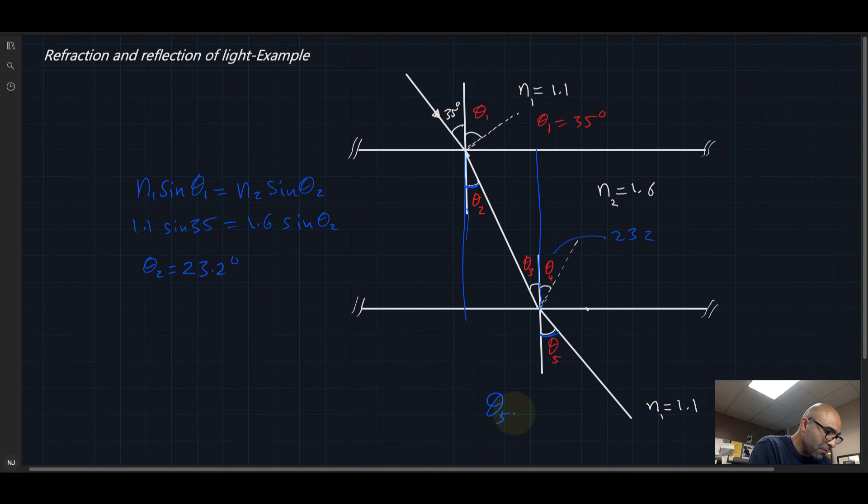So theta 5 must be equal to 35 degrees. And just to make sure, please go ahead and use Snell's law to do that and see if you actually are going to get 35 or not. And that's it for now, thank you.